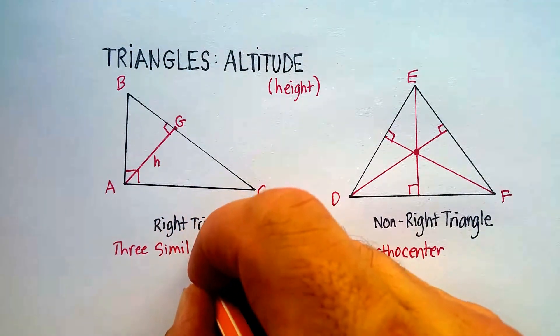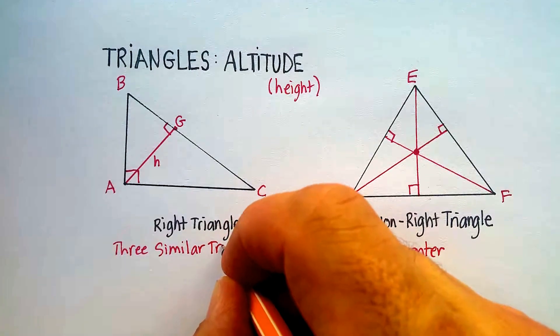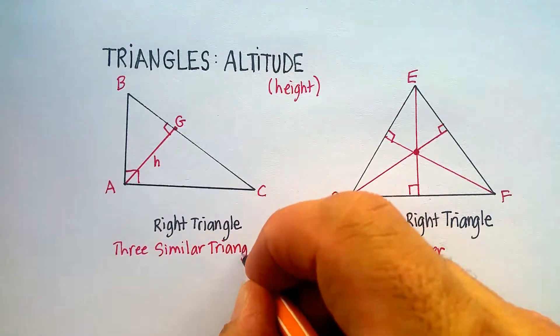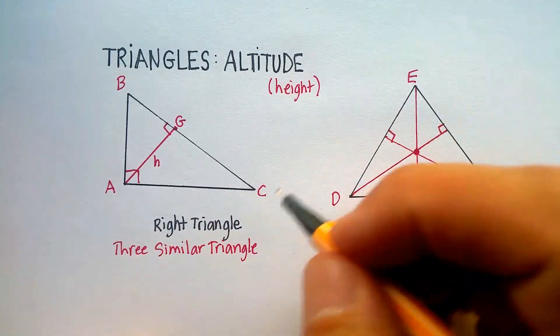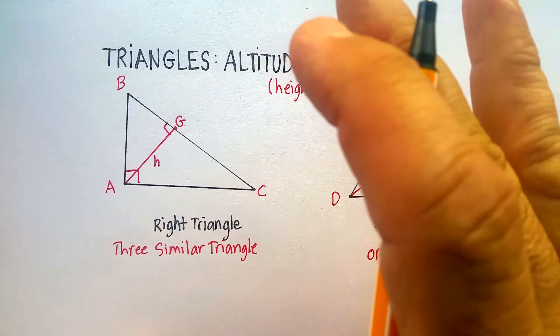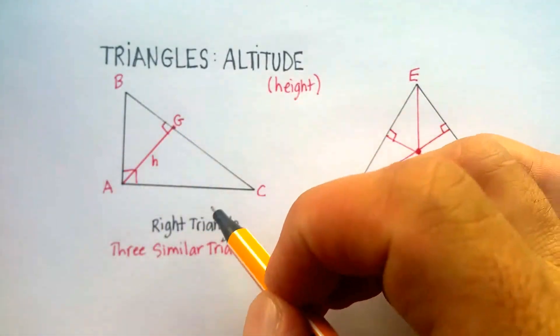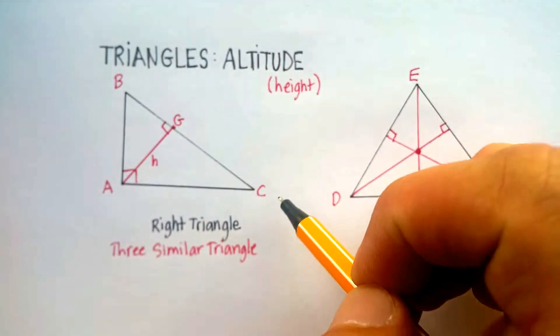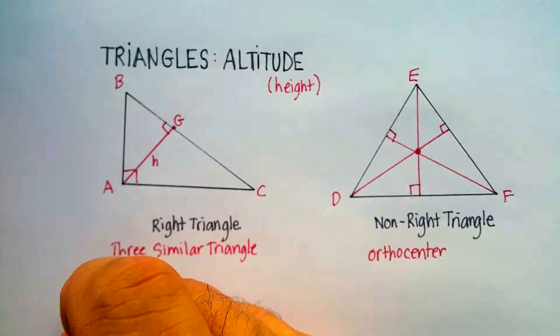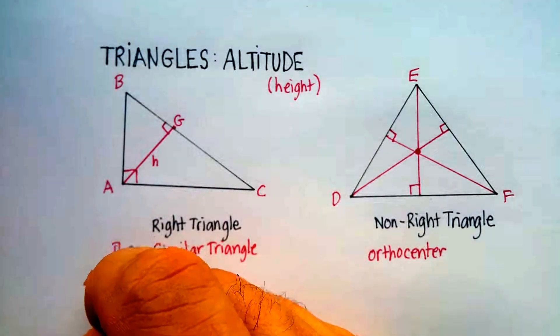What I've done here is I've created three similar triangles. Now, let me talk about what similar means. Similar means that they have the same proportions. Now, let's identify all three of the triangles that are here. I've got triangle ABC, triangle ABC.